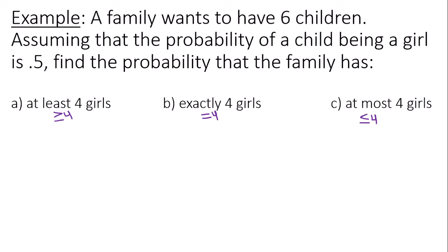It's clear that the behavior we're observing here is a child being a girl, so a success for a binomial experiment in this case is the child is a girl. That means that the probability of a success p is equal to 0.5.